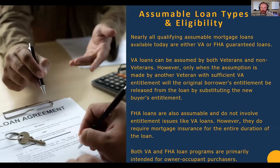FHA loans are obviously assumable as well, but they don't involve entitlement issues like a VA loan. However, they do require that mortgage insurance is on the loan for the duration of that loan, no matter what the LTV is or how much it's been paid down. Both VA and FHA loan programs are primarily for owner-occupant purchasers, but we will talk a little bit about some changes on future slides.